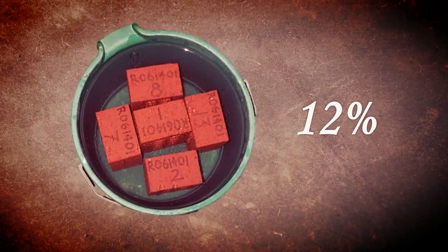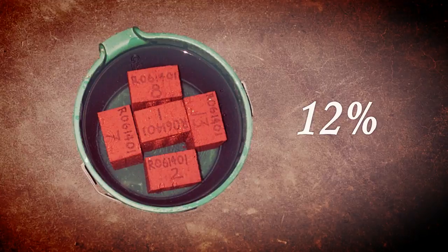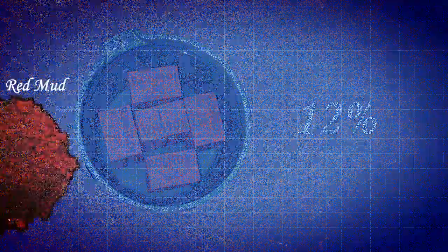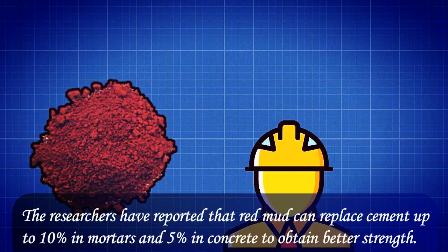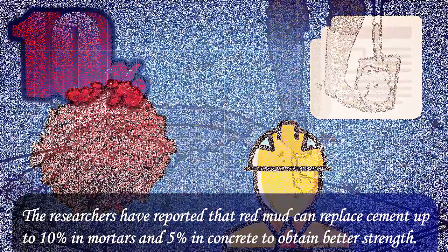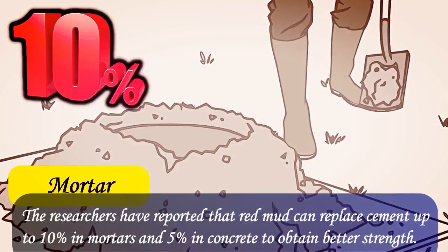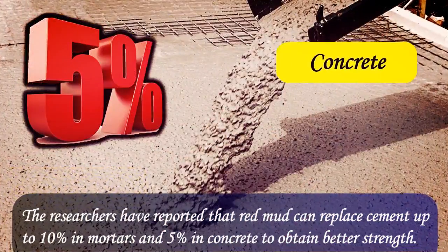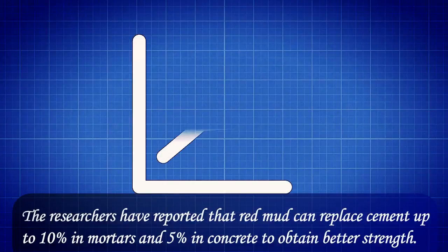The water absorption of these bricks is hardly 12 percentage. Red mud is also used as a partial replacement for cement. Researchers have reported that red mud can replace cement up to 10 percentage in mortars and 5 percentage in concrete to obtain better strength.